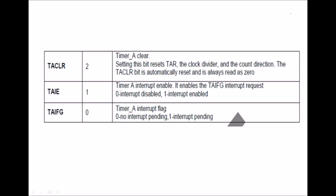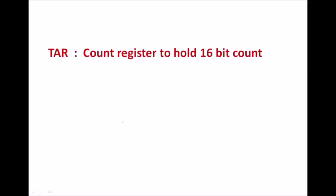TACLR is Timer A clear; setting this bit resets the TAR register. TAIE is Timer A interrupt enable — this bit enables the TAIFG interrupt request. 0 means interrupt is disabled, and 1 means interrupt is enabled. TAIFG is the Timer A interrupt flag bit. If this bit is 0, no interrupt is pending. If it is 1, an interrupt is pending.